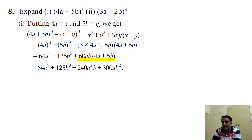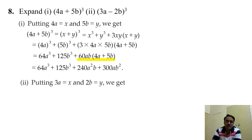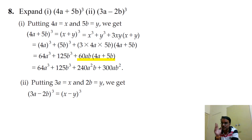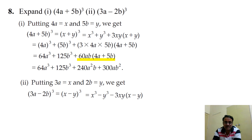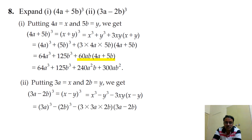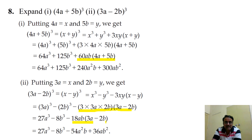Second part: expand (3a - 2b)³. We let x = 3a and y = 2b, giving the form (x - y)³ = x³ - y³ - 3xy(x - y). Replacing x by 3a and y by 2b and multiplying out, we get 27a³ - 8b³ - 54a²b + 36ab².